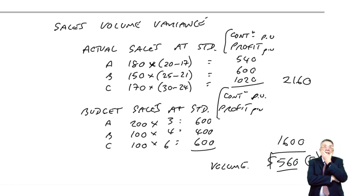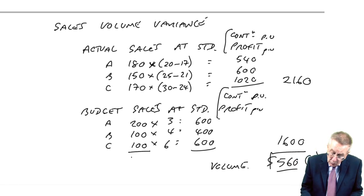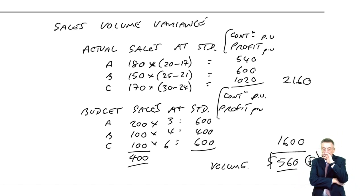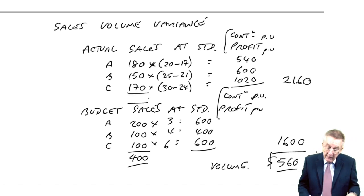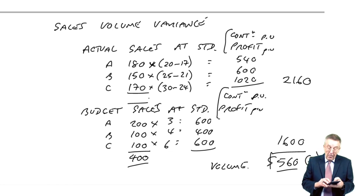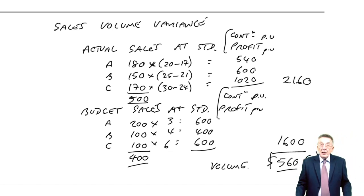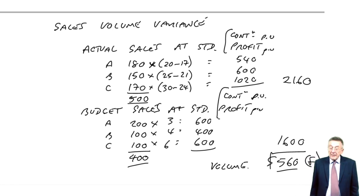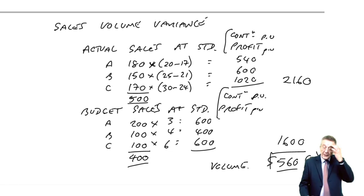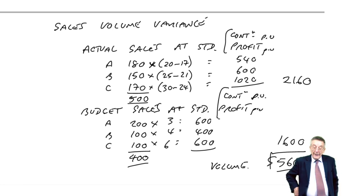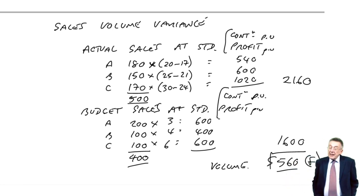However, just look at that sales volume variance. Why has it happened? There are actually two different reasons for that occurring. One is that in total, we'd budgeted on selling 400 units. In total, how many units did we sell? In total, we sold 180, 150, 170. We sold 500. And obviously, I hope, if you sell more units, you're bound to make more profit. 500 against 400, 100 extra units, more profit.